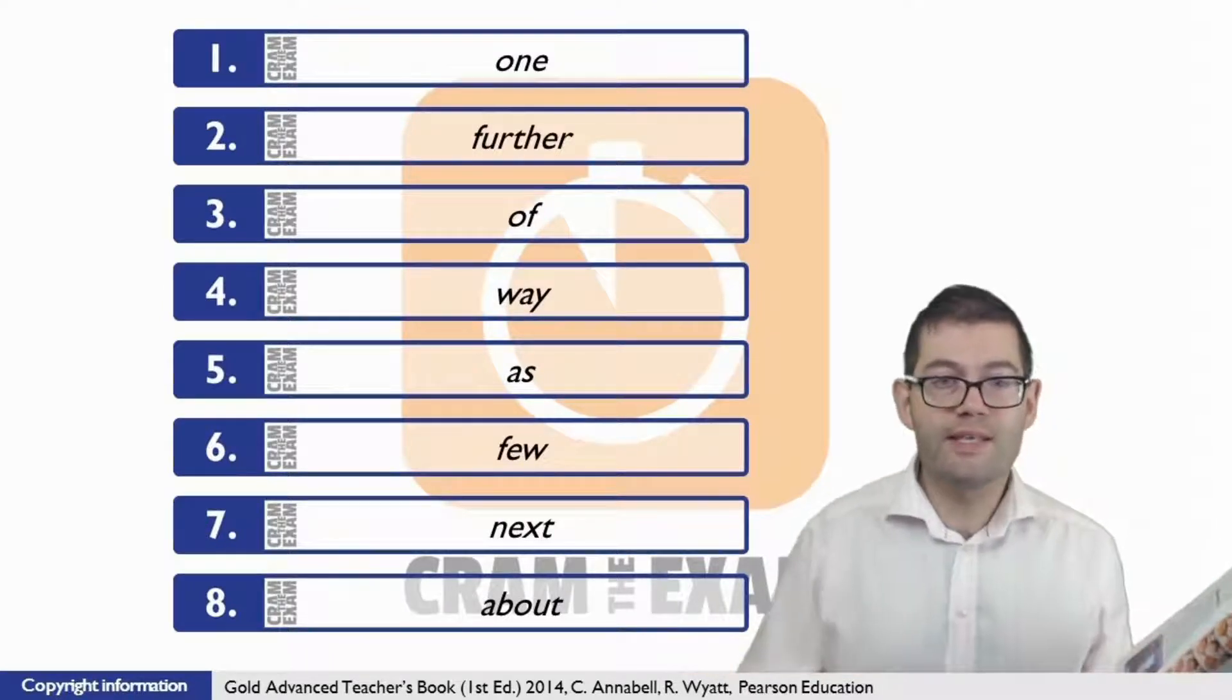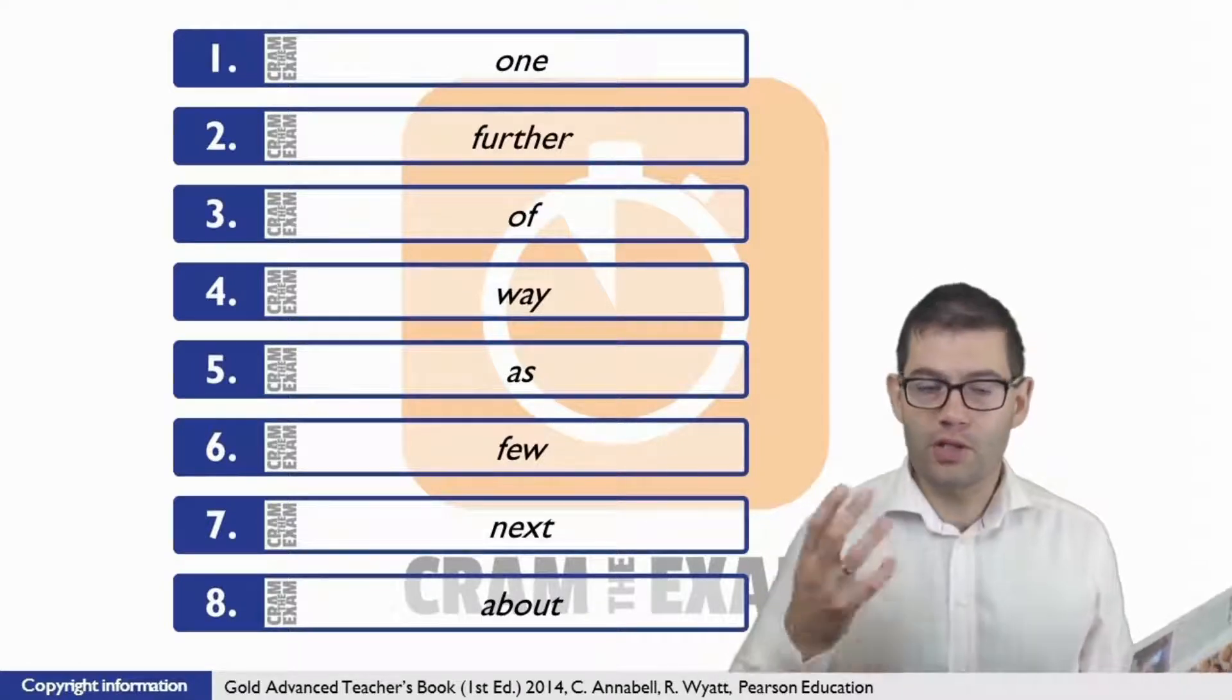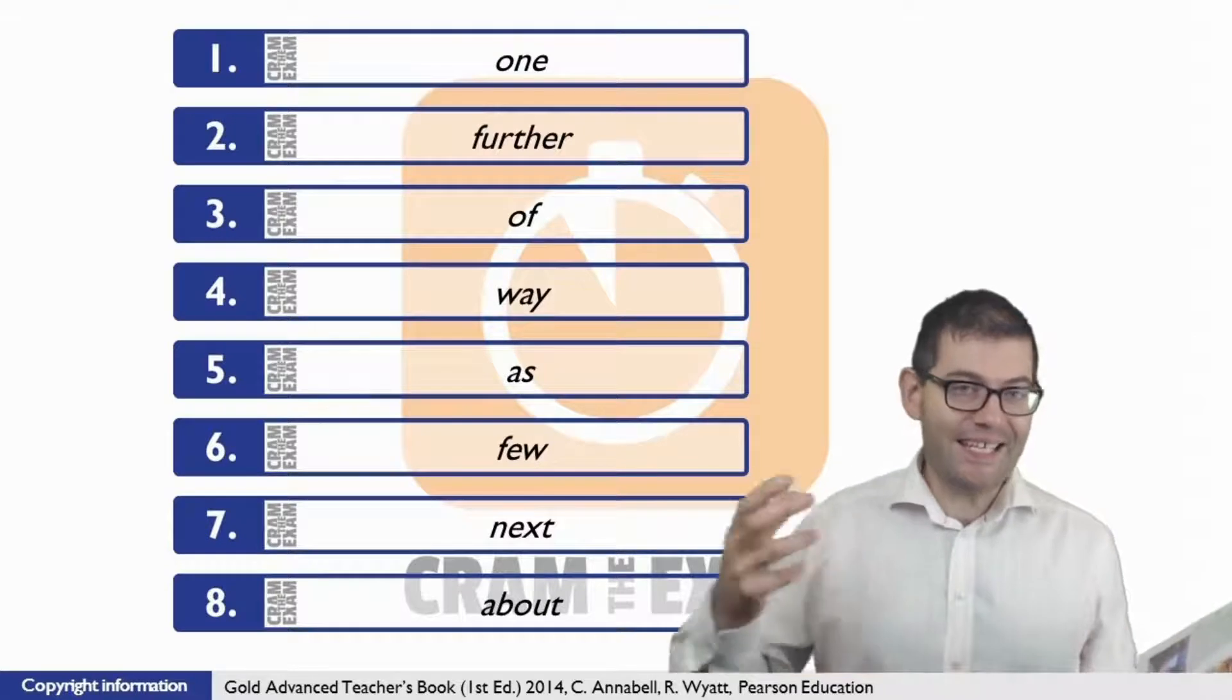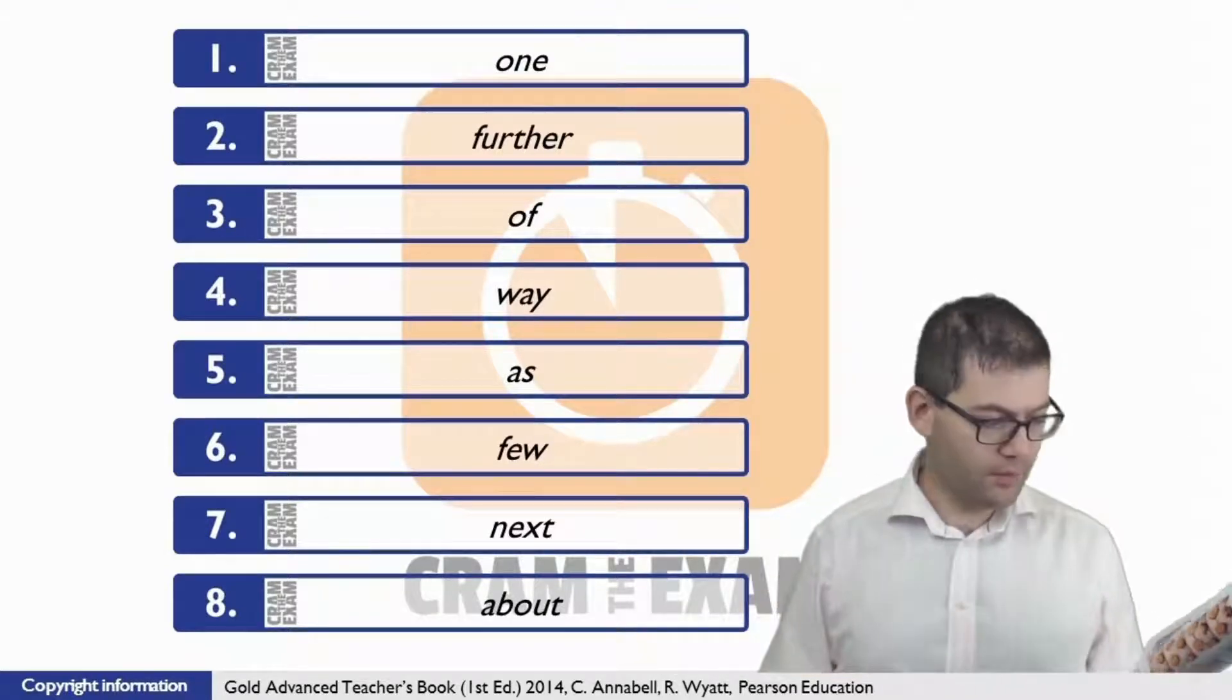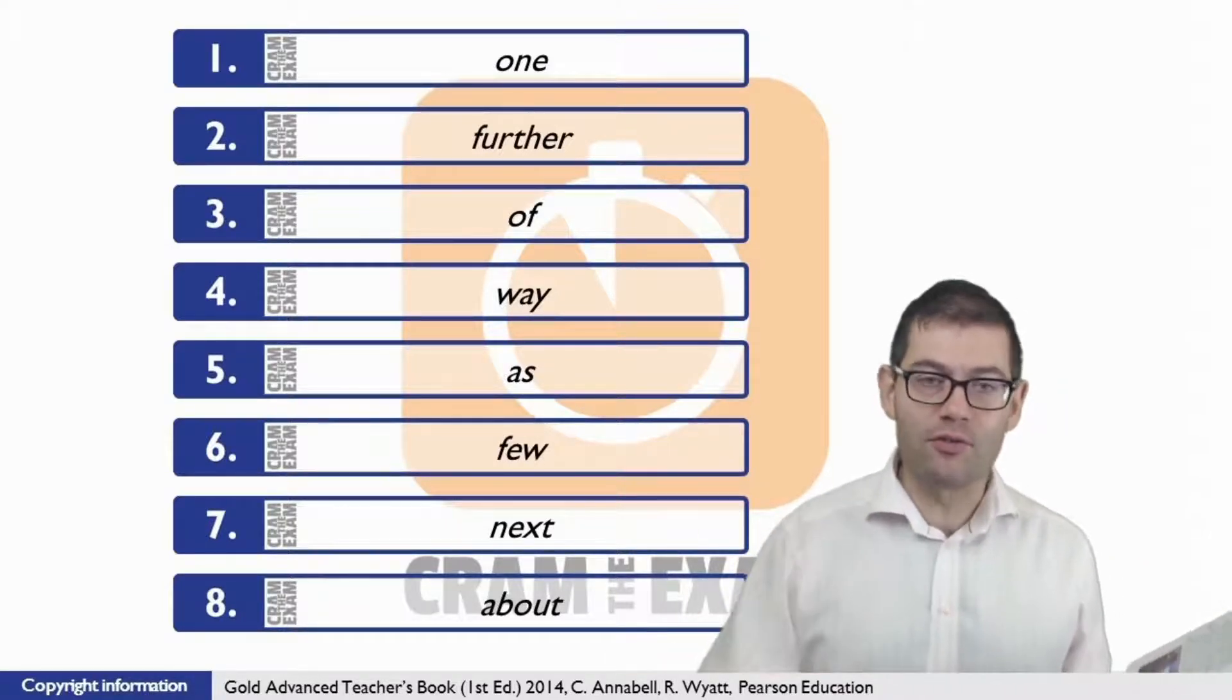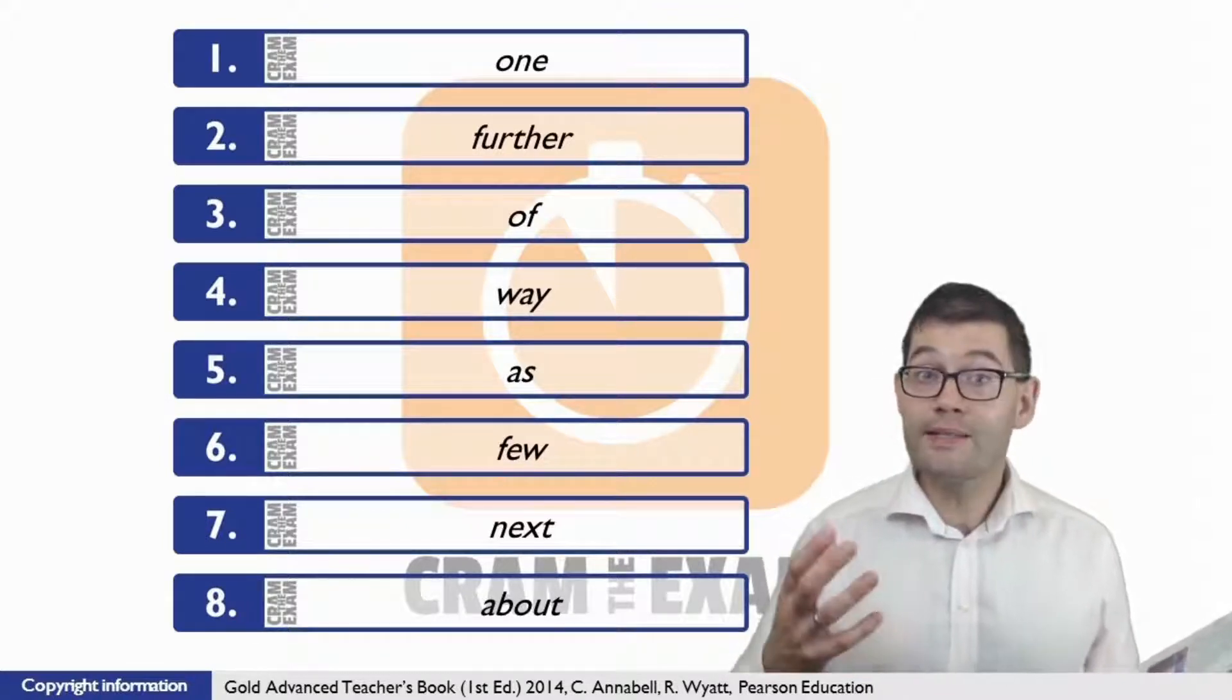For question number four, the context here is basically saying that speed dating is getting into the boardroom and scientific conferences. So we need to find a way of saying 'getting into' or 'being located within.' Of course, the word that we're looking for is 'way' - to find your way into something.